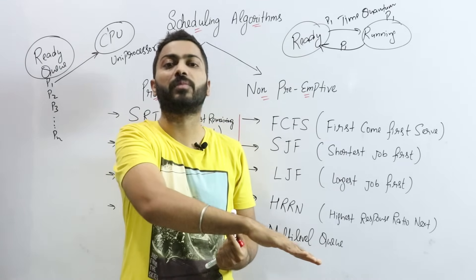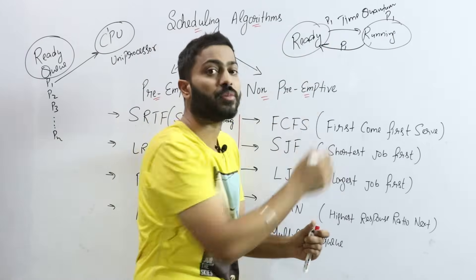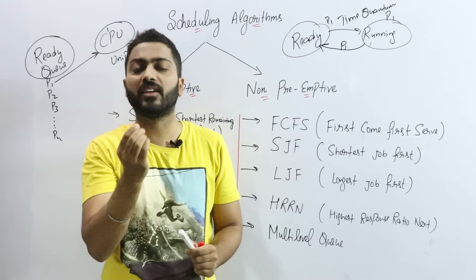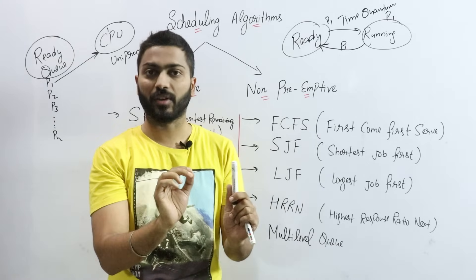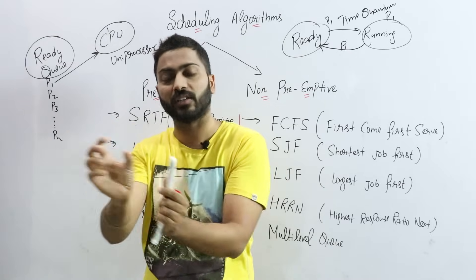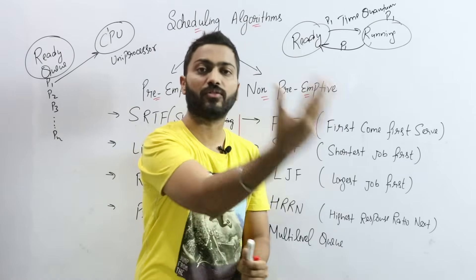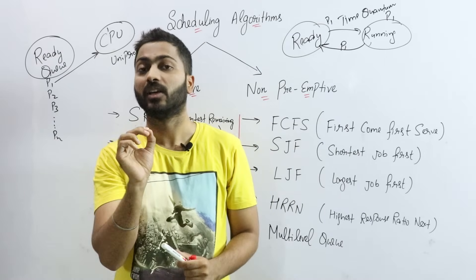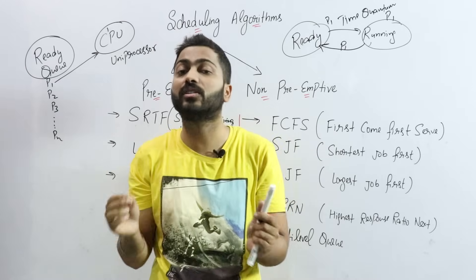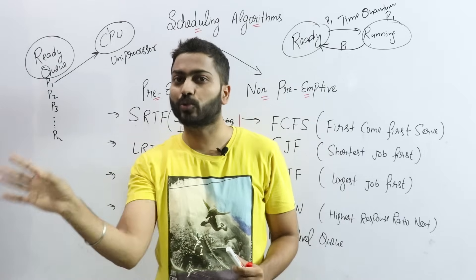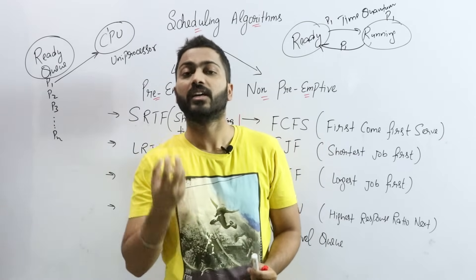In preemptive scheduling, a process is put back into the ready queue and then moved to the running queue again. This is the concept of time quantum. For example, if I have 10 students and I ask each student only 2 questions per turn, student number 10 won't have to wait as long compared to if each student answered 5 questions at once. This improves responsiveness — that is the preemptive approach.